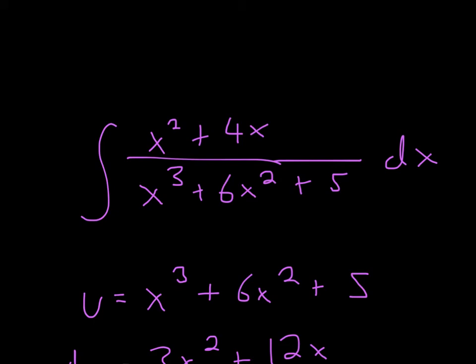So for this problem, the first thing we're going to try is u-substitution. Whenever you do u-substitution, always try to set the entire denominator as u. So u is equal to x cubed plus 6x squared plus 5.